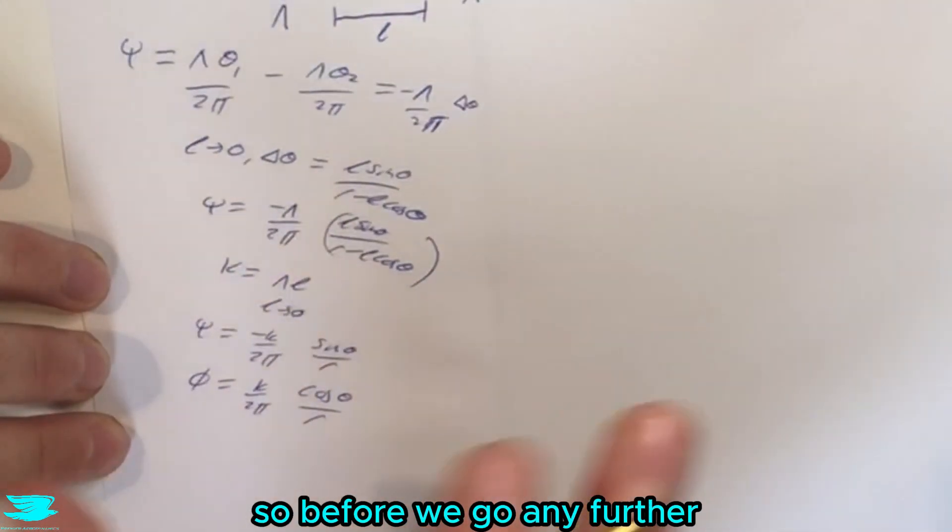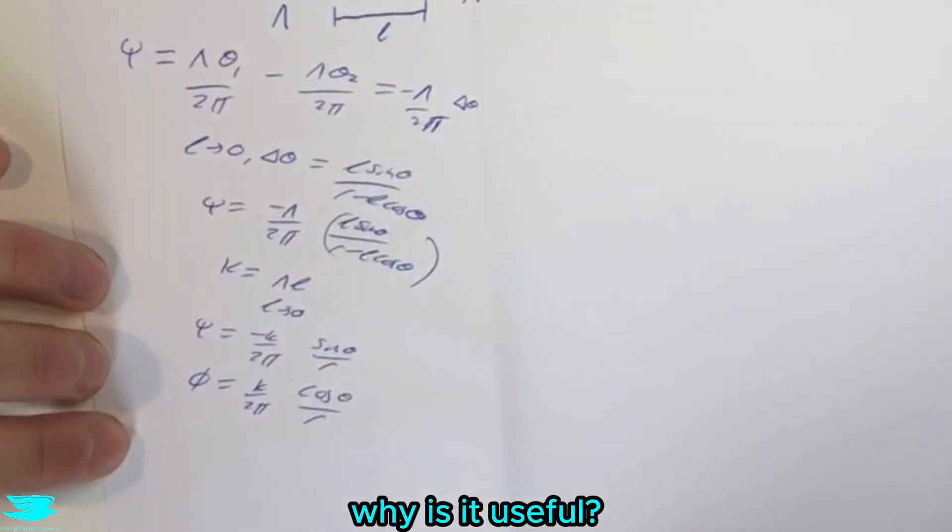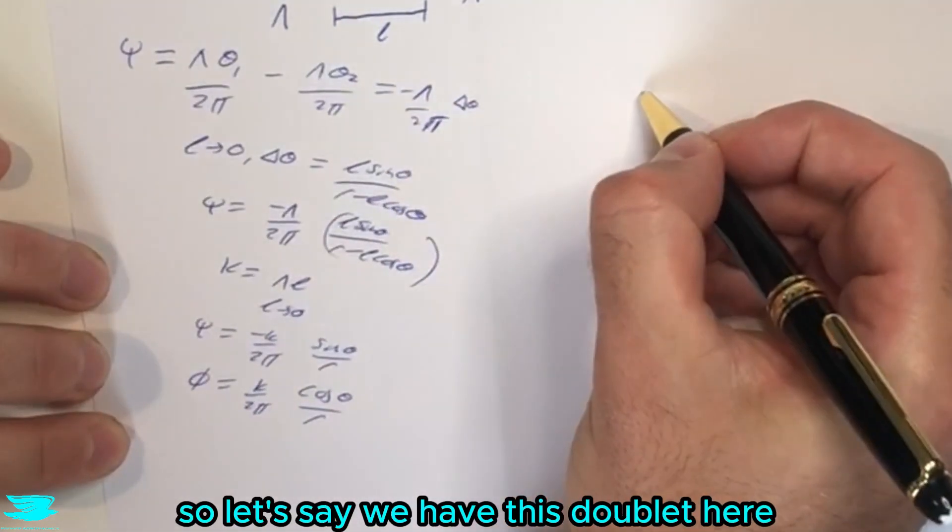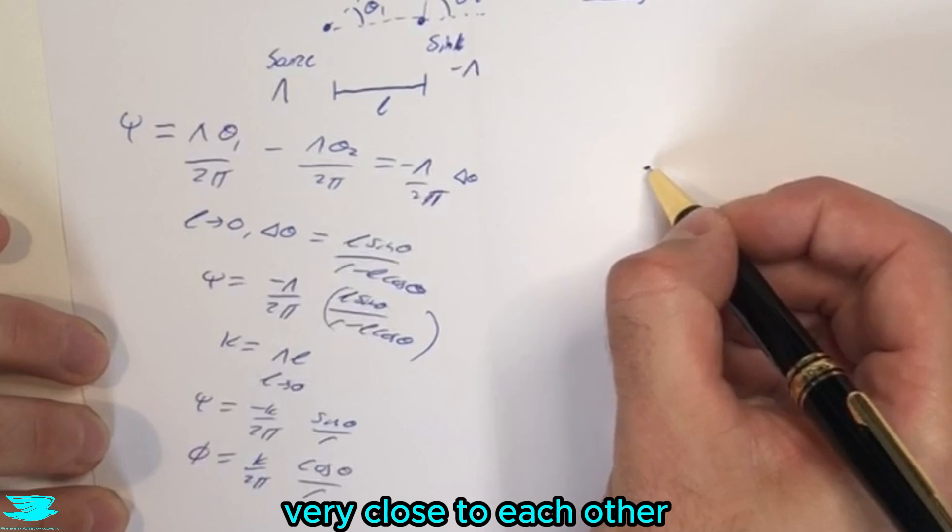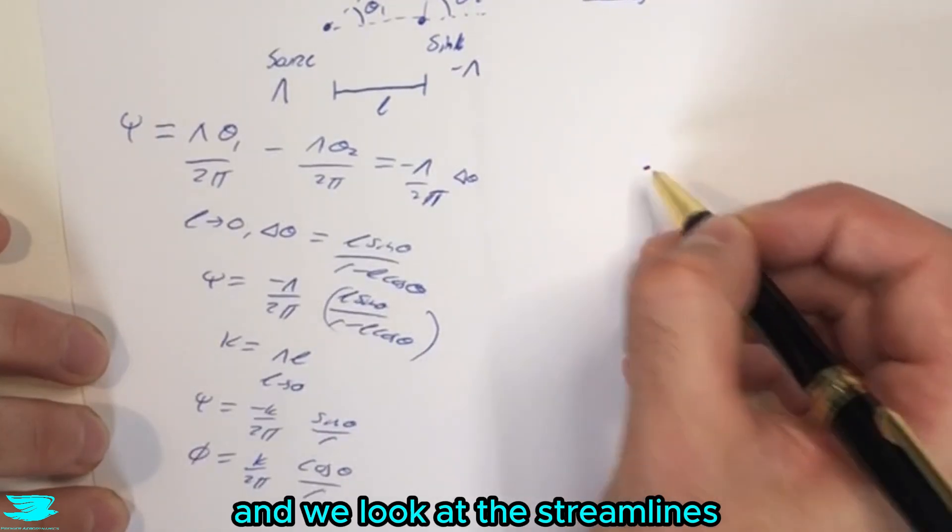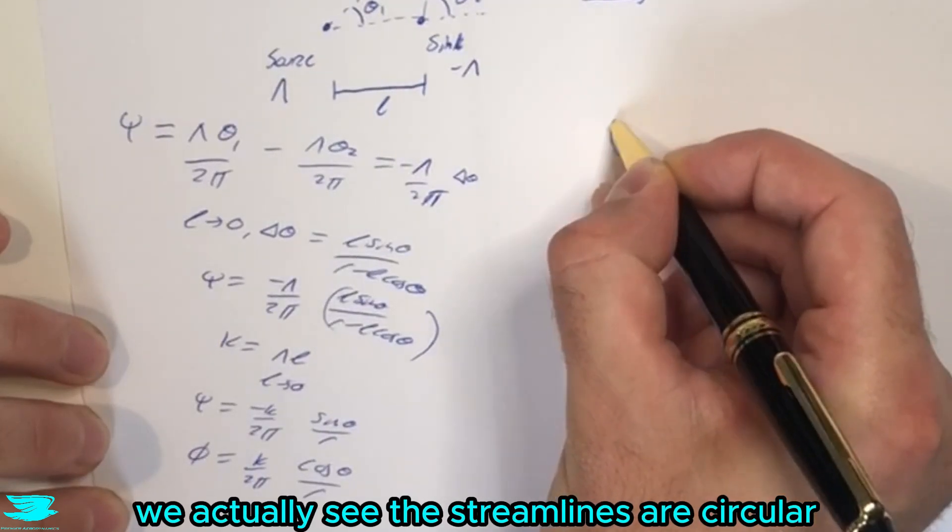So before we go any further, let's talk about what happens here. Why is this useful? So let's say we have this doublet here where we have a source and sink very close to each other. And we look at the streamlines. We actually see that the streamlines are circular.